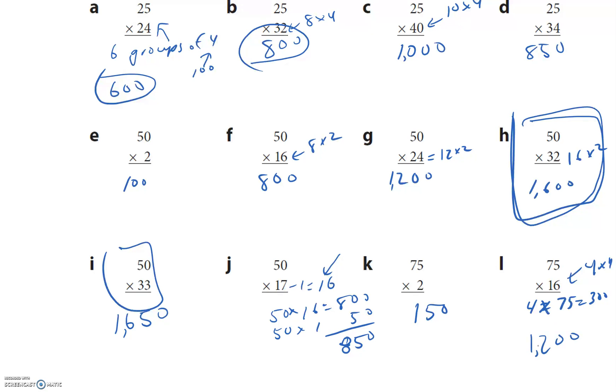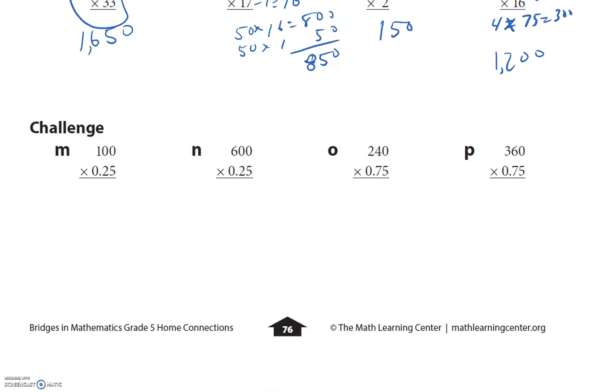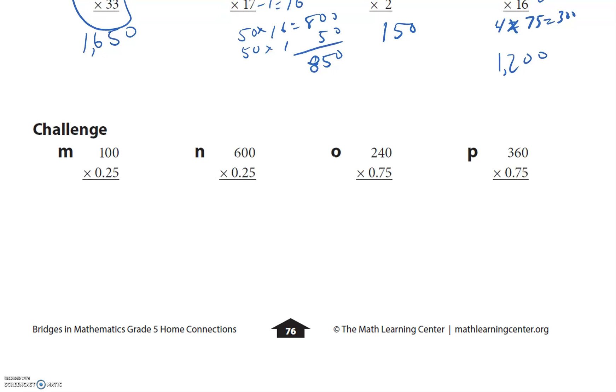These are the challenge problems. Let's just treat them like fractions, right? So this is 100 times one-fourth. A fourth of 100 is a quarter, so it's 25. So one-fourth is the same thing as 0.25. I want to divide 600 by four: 600 divided by two is 300, and 300 divided by two is 150.